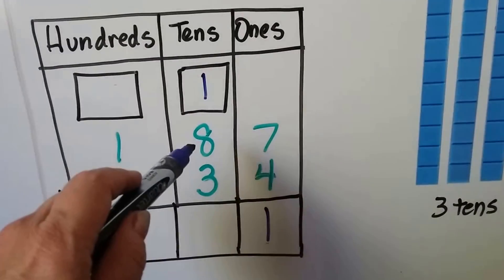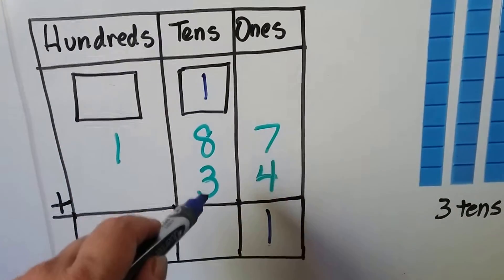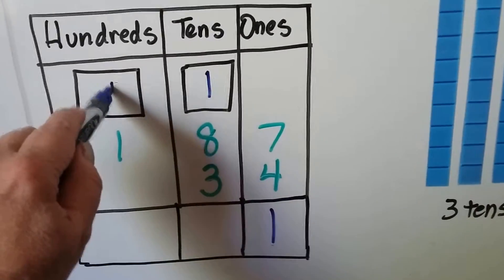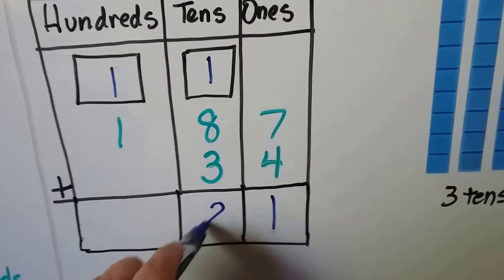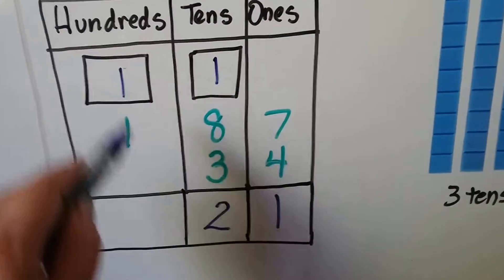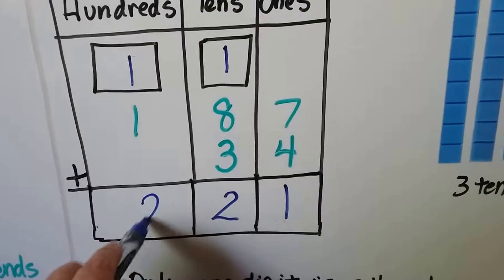Now we can add the tens starting with the largest number, 8, 9, 10, 11, 12. We regroup it again because we can't put a 12 in here. We put the 1 up here and the 2 down here and now we add the hundreds. We have 221.